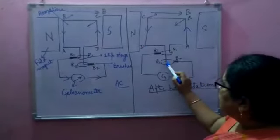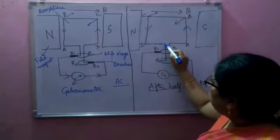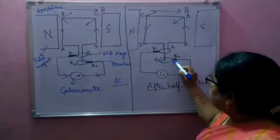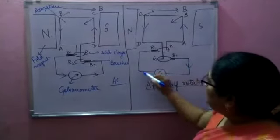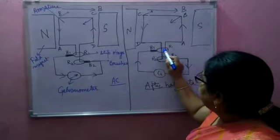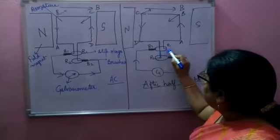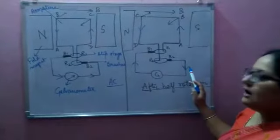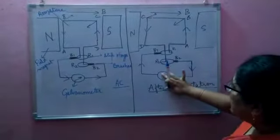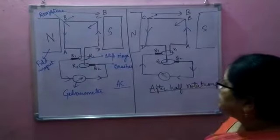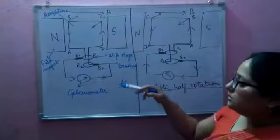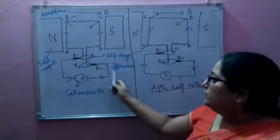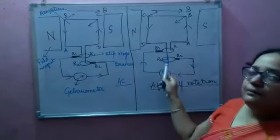It will follow this path and then here. Since it is a conducting ring, the current will flow like this, and through the brushes the current will move from B2 to B1. So in the outer circuit, the direction of current will be from B2 to B1, and the galvanometer will show deflection in the right direction. You can observe that after half rotation the direction of current changes — initially it was from B1 to B2, and after half rotation it is from B2 to B1.